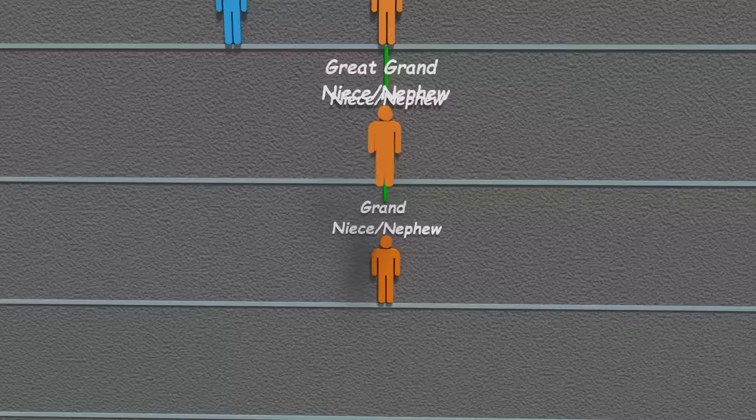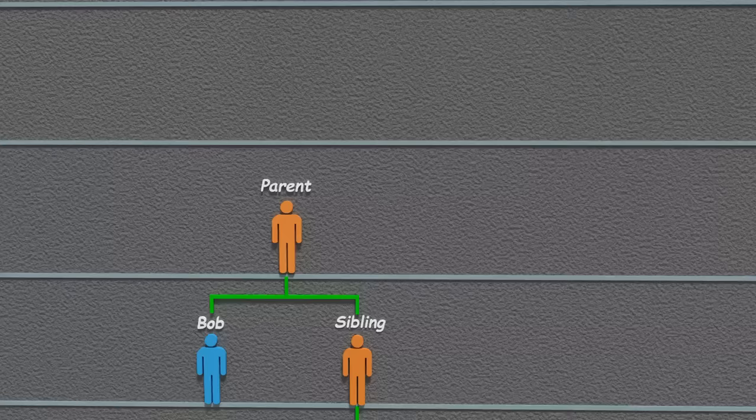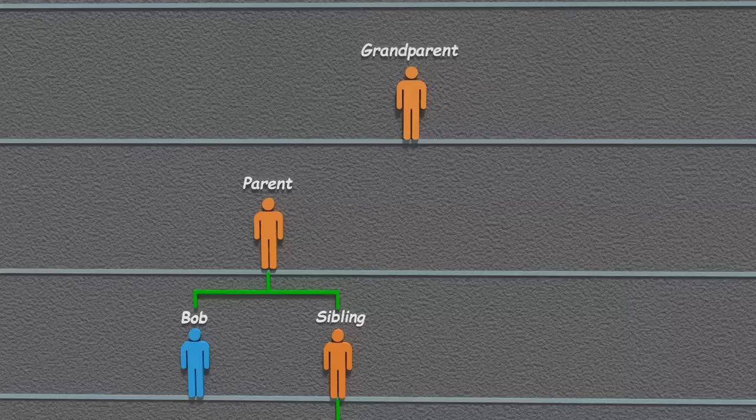At some point, Bob's niece or nephew may also have a child. This person will be Bob's grandniece or nephew, and the next generation would be great-grand. With each generation after this, you just add another great onto it.